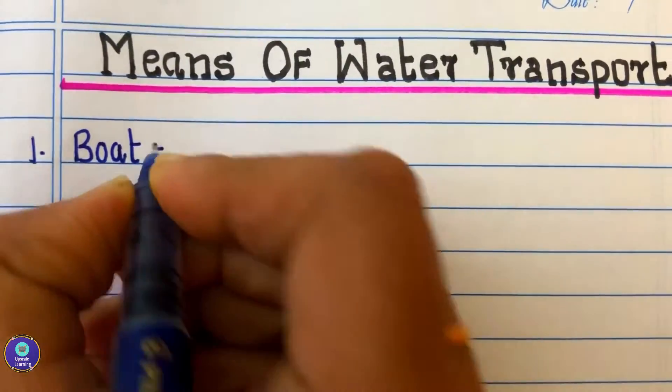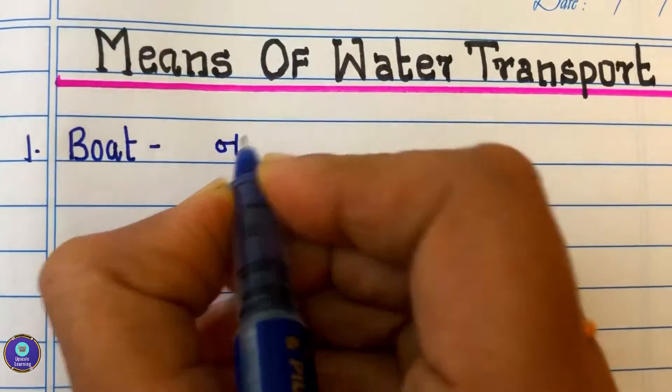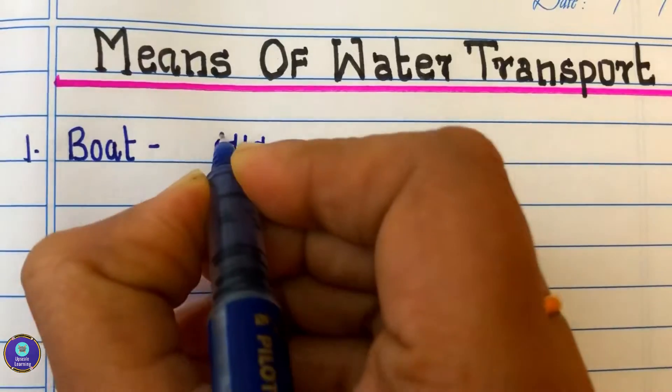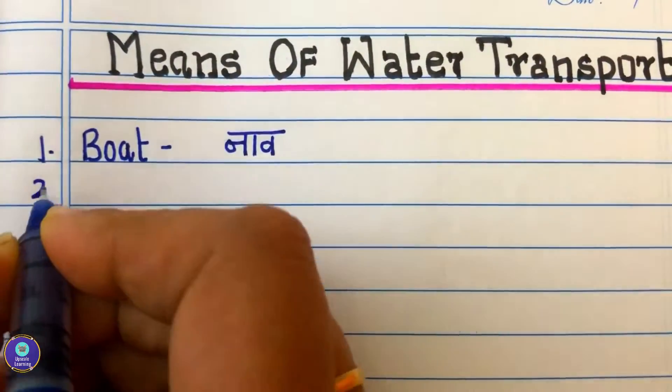First one is boat, B-O-A-T, boat. Boat is called as Naav in Hindi.